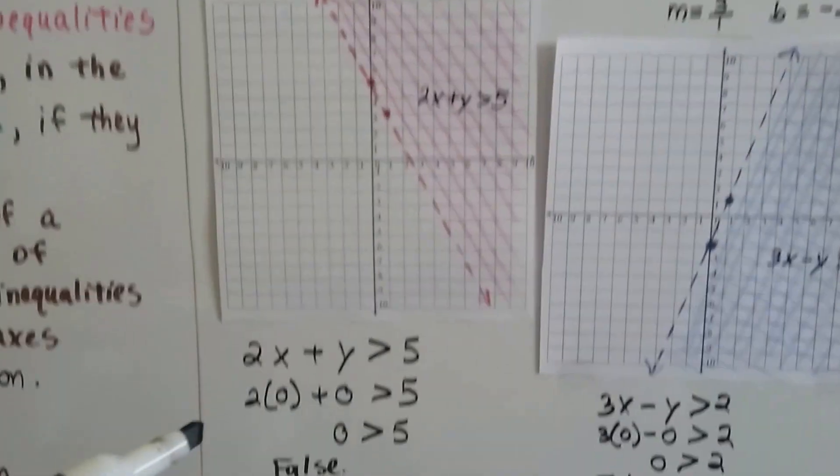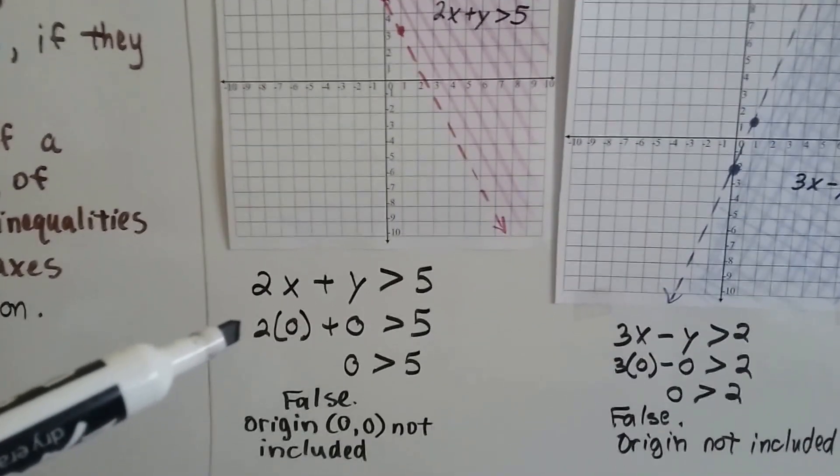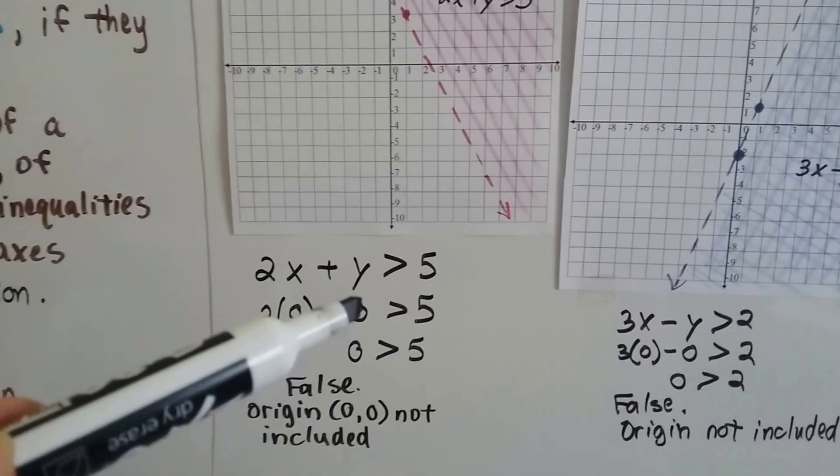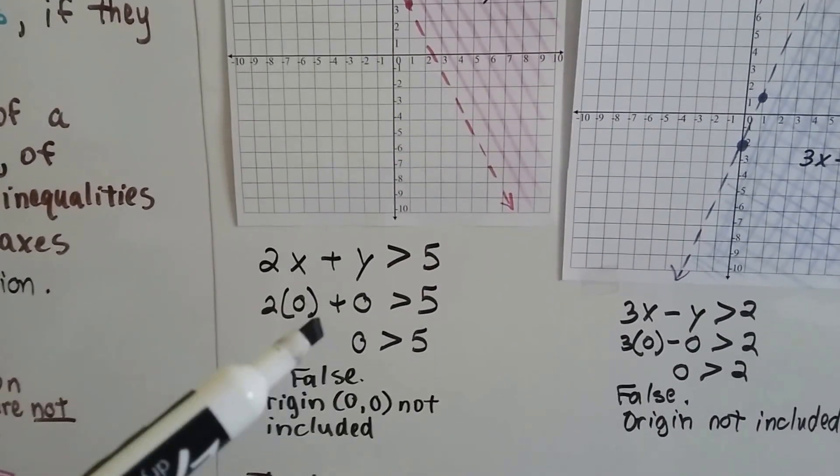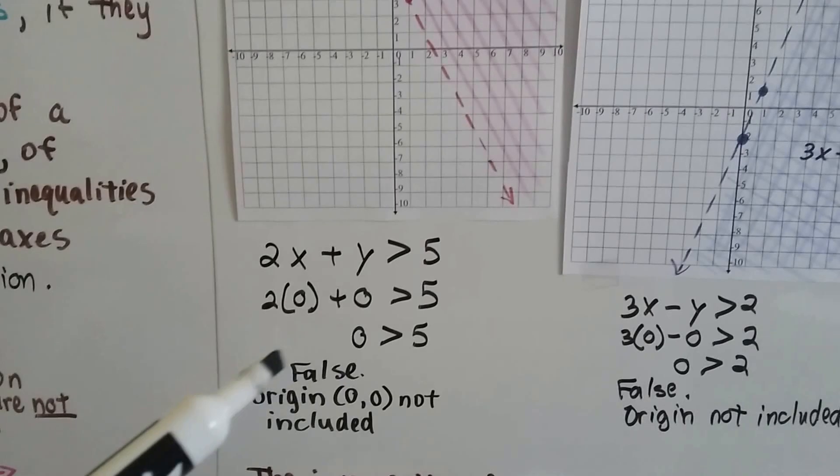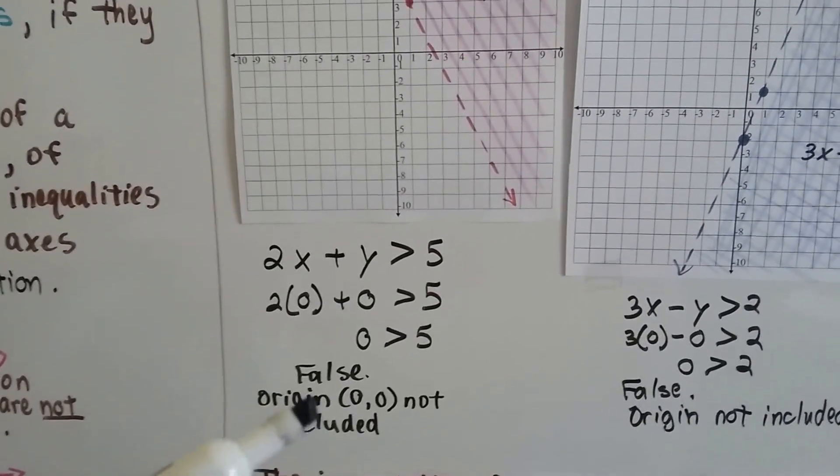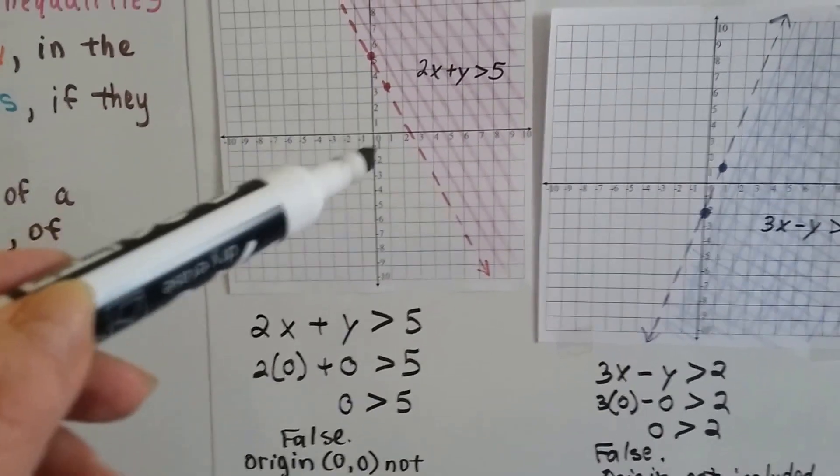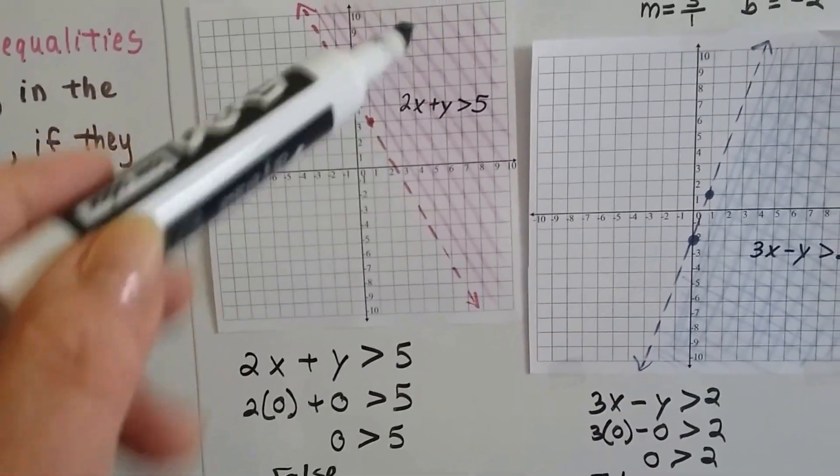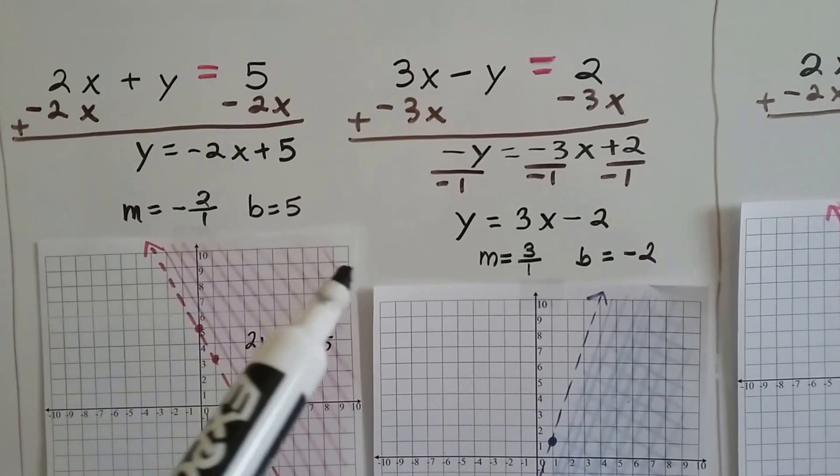We draw our dotted line, and we plug in the origin, 0, 0. x is 0, y is 0, and it turns out that 0 is greater than 5, and that's false. So that means the origin is not included in the shaded area. This is not included in the shaded area. We shade this area.